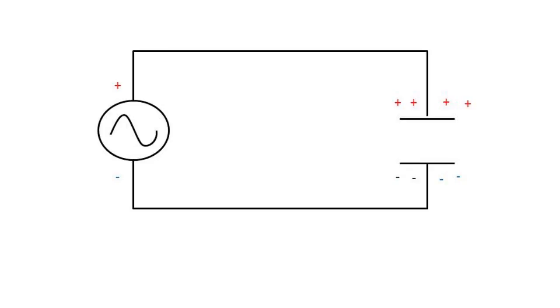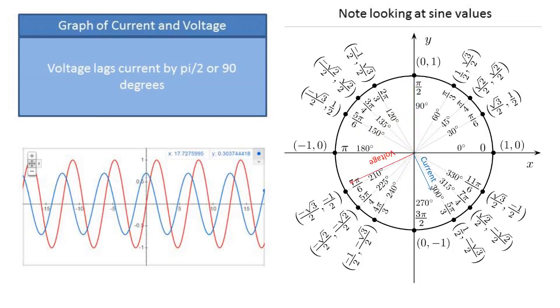Now let's go over how current and voltage is graphed when going over a circuit that involves capacitors in AC. In a capacitor circuit in AC, the voltage will lag behind the current by pi over 2 or 90 degrees.